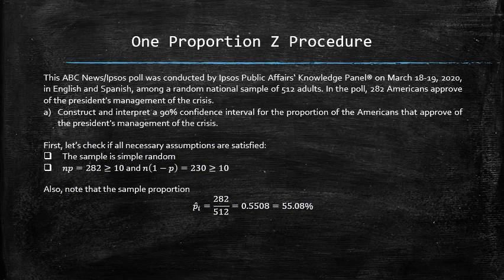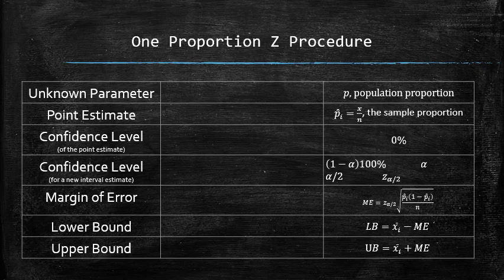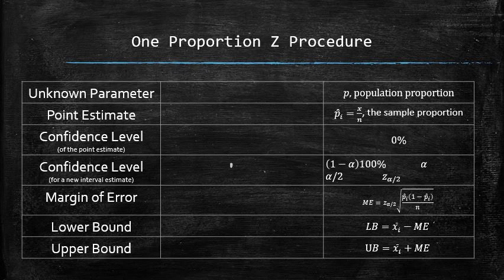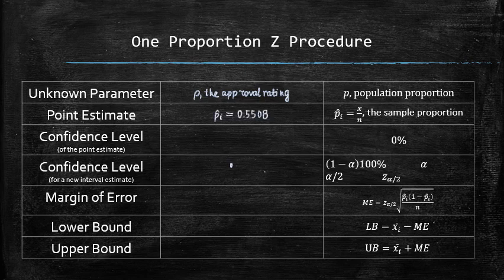Once the assumptions are verified, we may apply the procedure. We will use the following template to construct and interpret the confidence interval. The unknown parameter in this problem is p, the approval rating. The point estimate is the sample proportion, p hat, which we found to be equal to 0.5508. How confident are we that the point estimate is equal to exactly the unknown parameter? We are 0% confident.